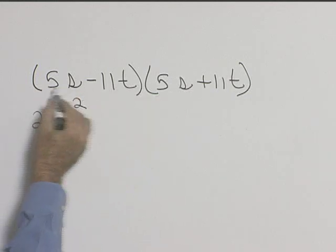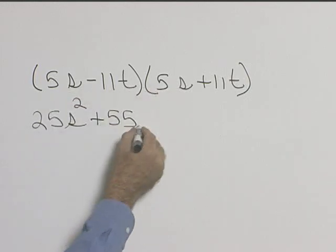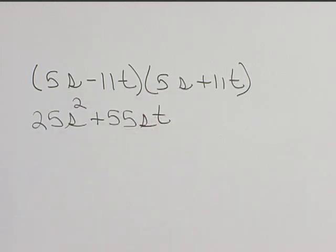Let's do our first term times our last. So 5 times 11 will give us 55, and s times t will make that just st, so we get 55st.